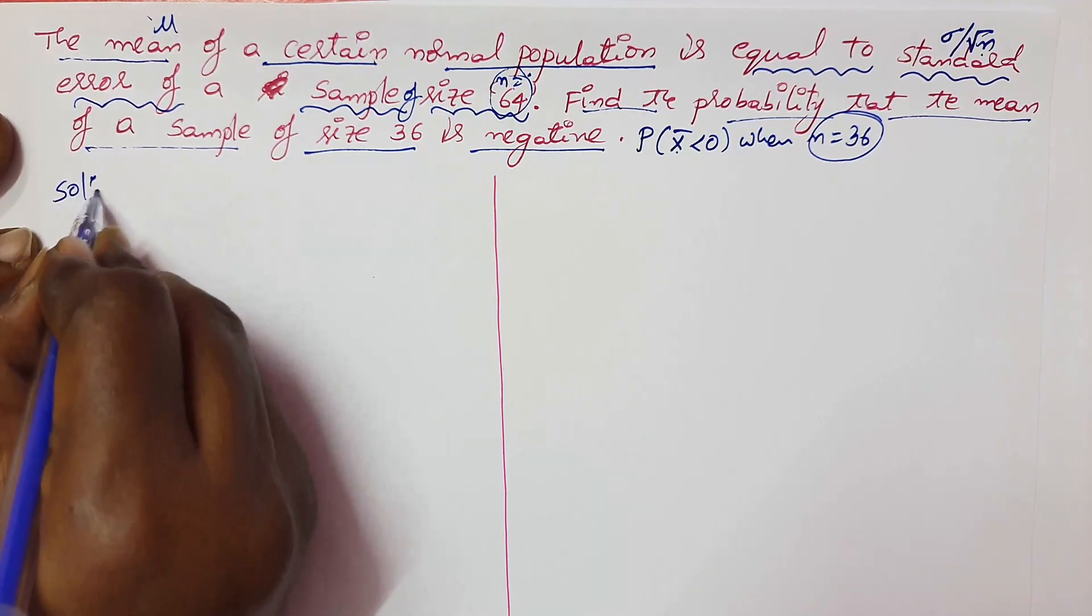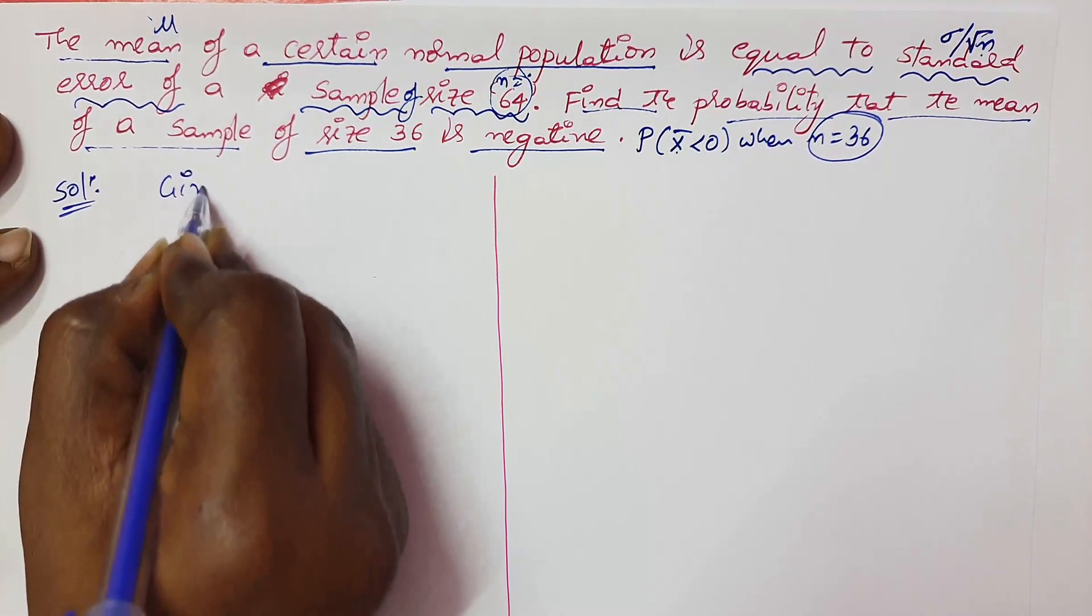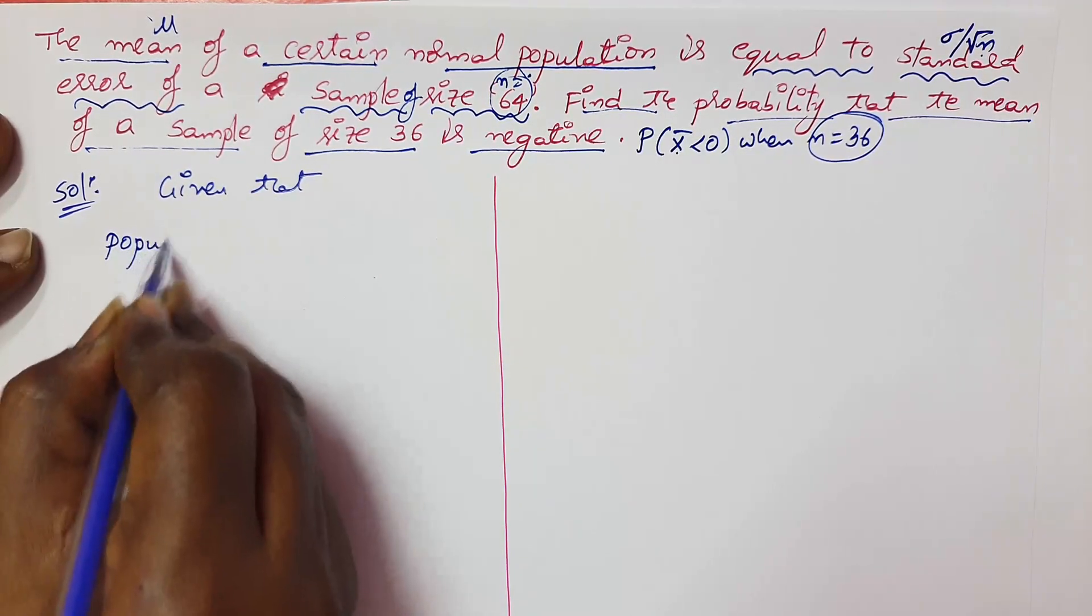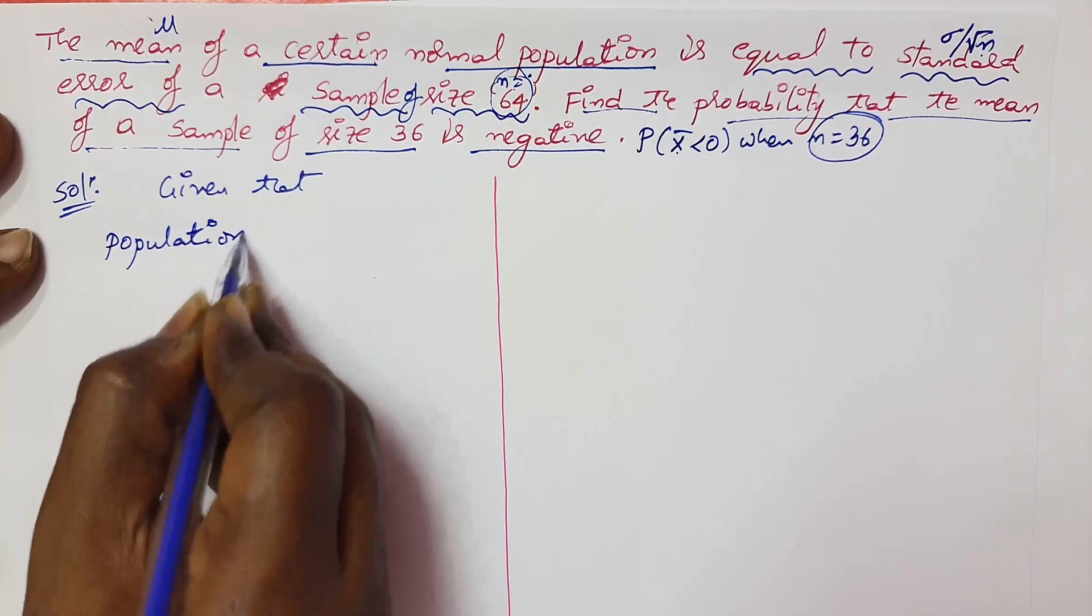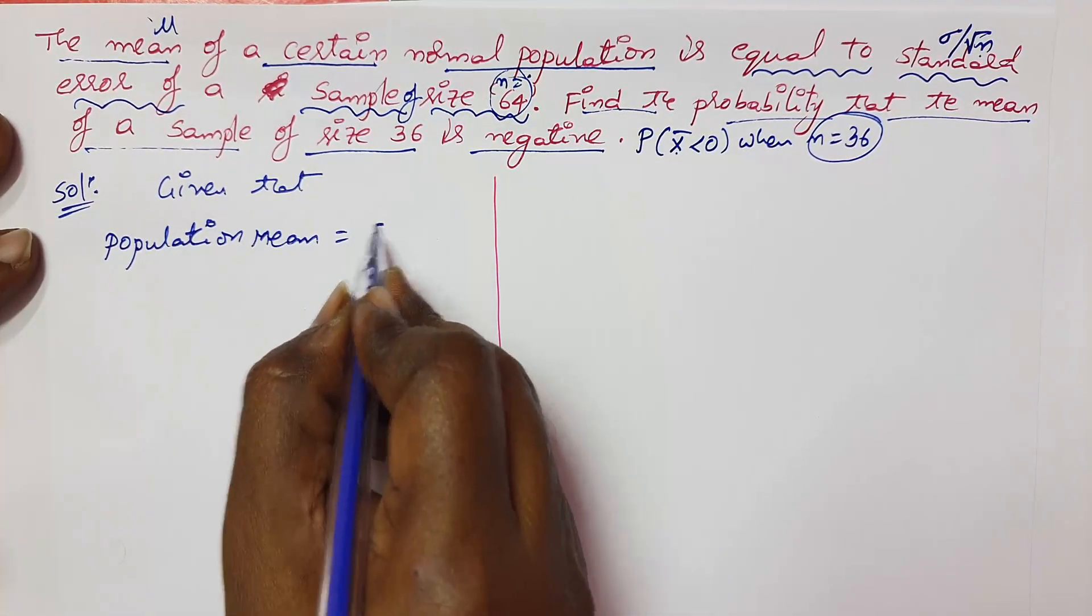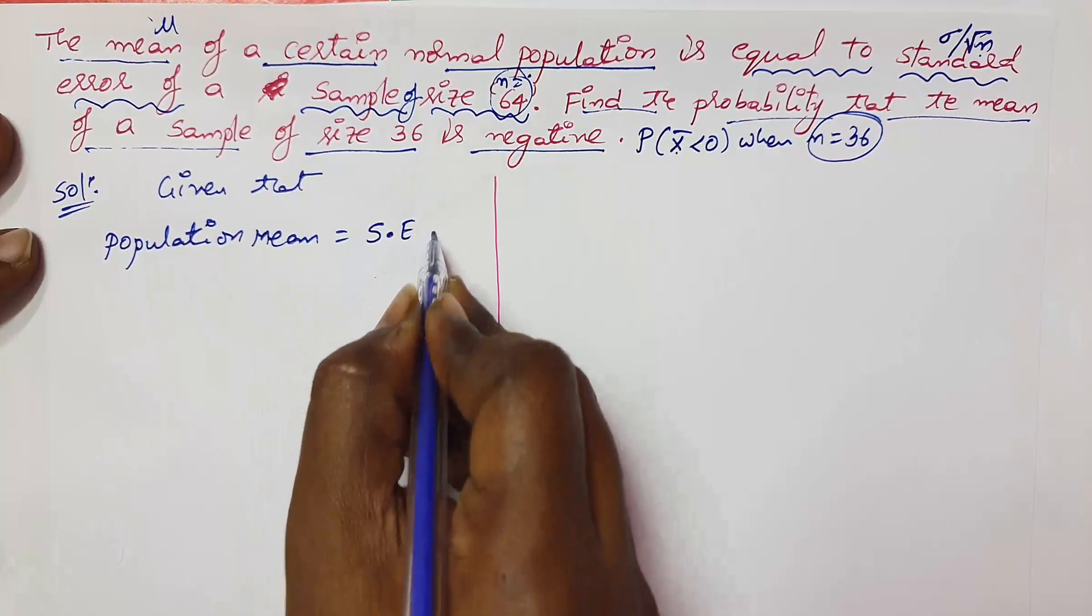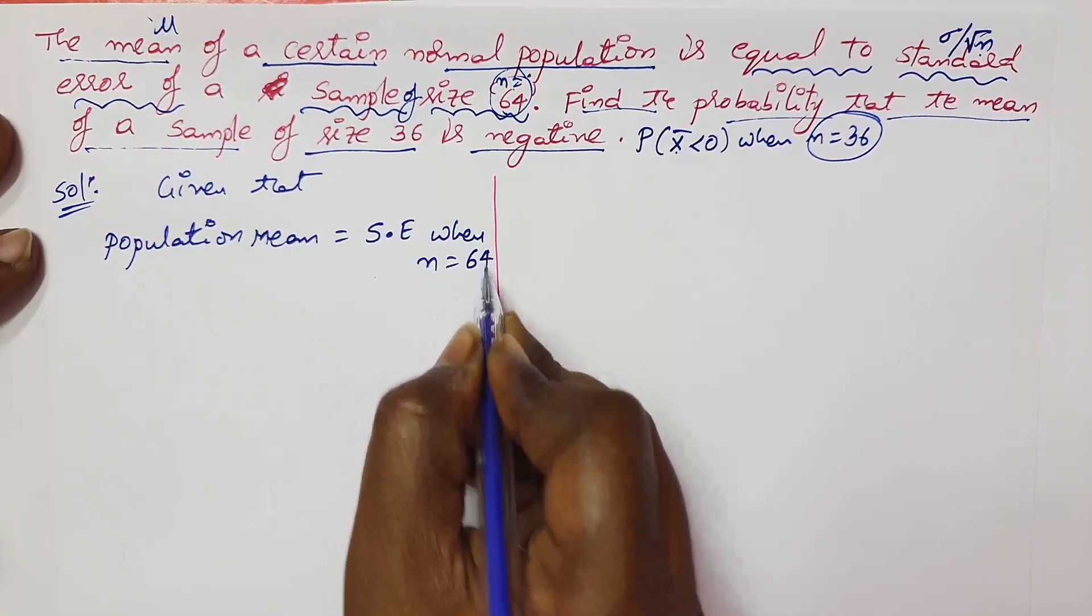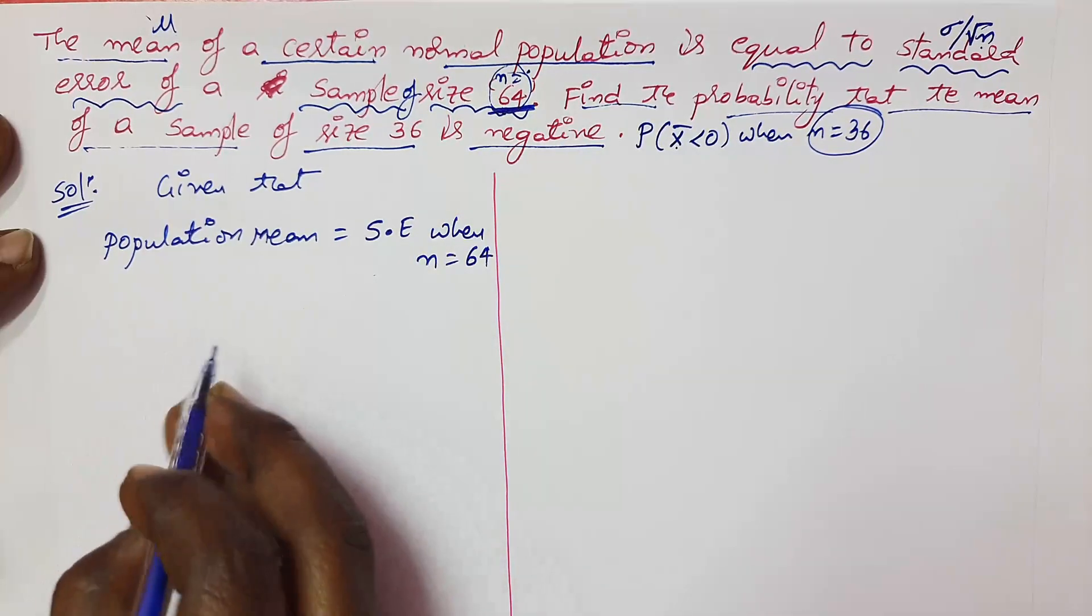See the solution. Given that population mean is equal to standard error when sample size n equals 64.